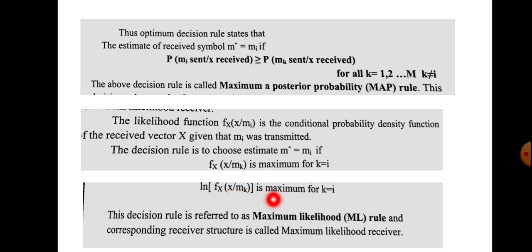The maximum likelihood rule states that ln[fx(x | Mk)] is maximum for k equal to i. The corresponding receiver structure that implements this maximum likelihood rule is called the maximum likelihood receiver. The maximum likelihood decoding rule is used to detect the transmitted signal on the receiver side.